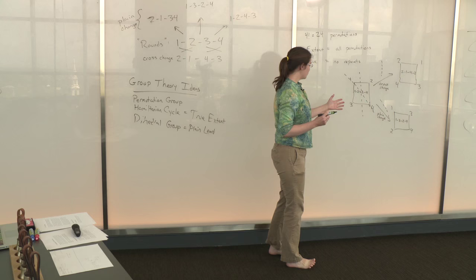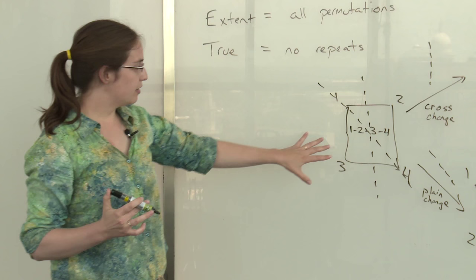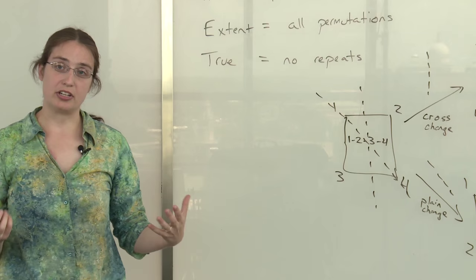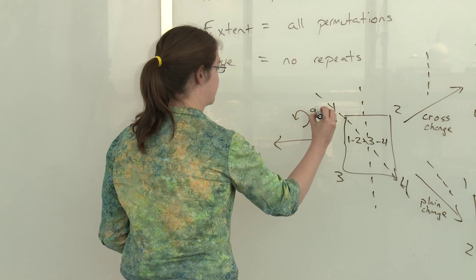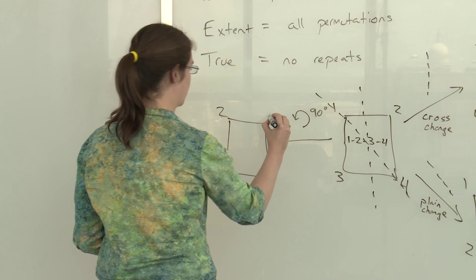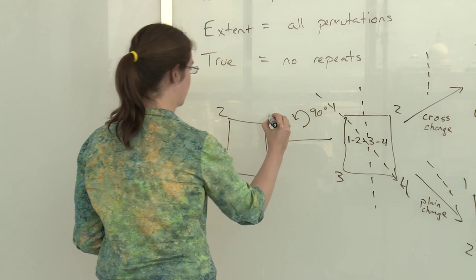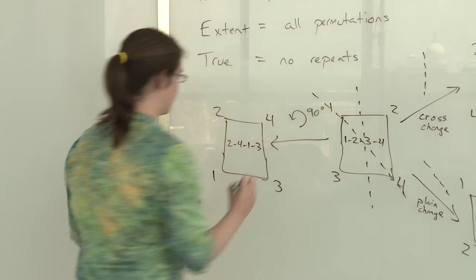In group theory looking at these symmetries, often this is discussed instead in terms of the rotation of the square rather than these reflections. So if you rotate the square by 90 degrees, what do you end up with? You end up with two four one three, which is actually the third change that we rang when we rang in plain hunt.